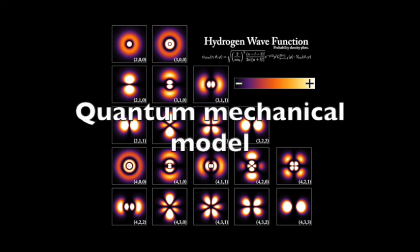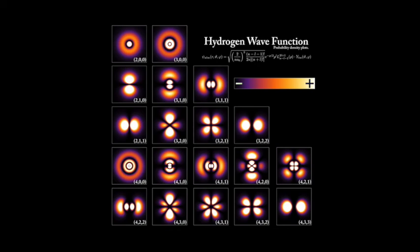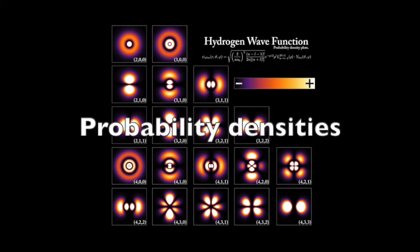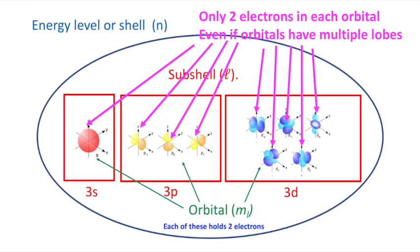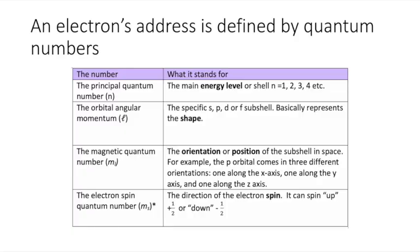We also talked about the quantum mechanical model of the atom, which is the modern model and can explain some phenomena that the shell model just can't explain. We talked about probability densities and the general quantum mechanical structure consisting of shells, subshells, and orbitals that are various shapes and in various orientations. We talked a little bit about quantum numbers, and quantum numbers are analogous to an address where a particular electron can be.